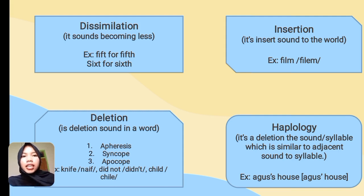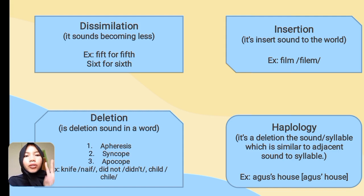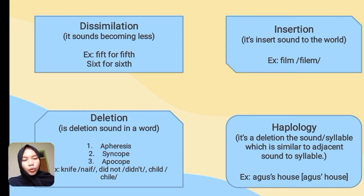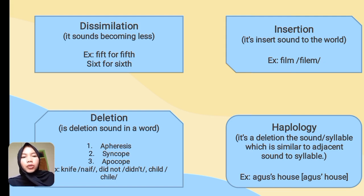The next type is deletion. Deletion is when a sound is removed. There are three types of deletion. The first is apheresis. Apheresis is the deletion of an initial sound. For example, the word 'knife' — we delete the 'k' at the front of the word.